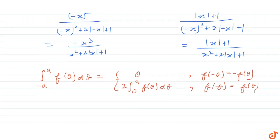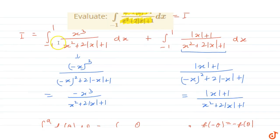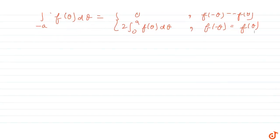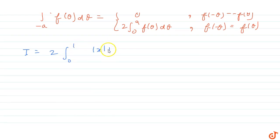So the first part of this integral will be 0 because it is an odd function. The second part will become 2 times the integral from 0 to 1 of (|x| + 1)/(x² + 2|x| + 1) dx.